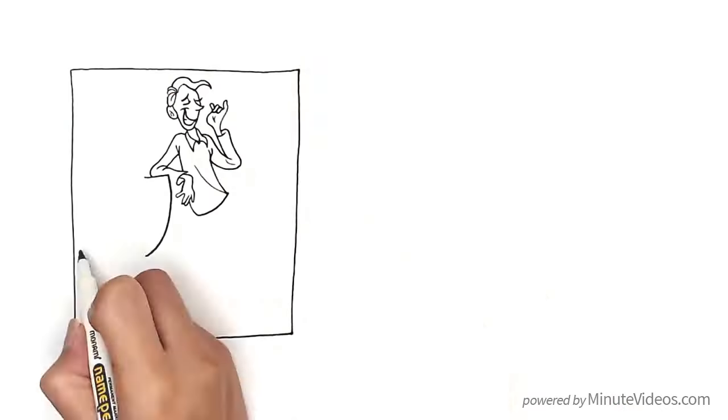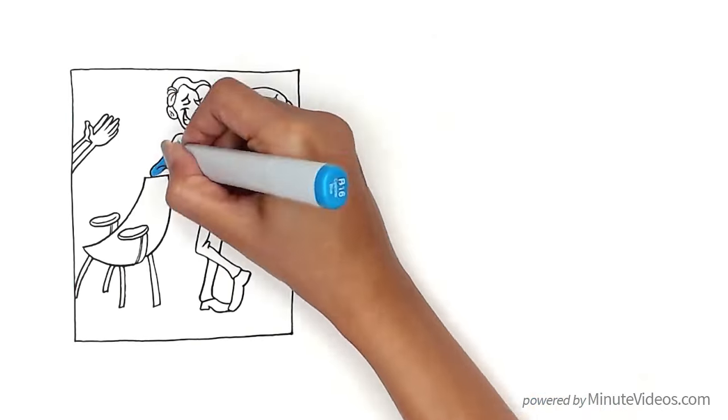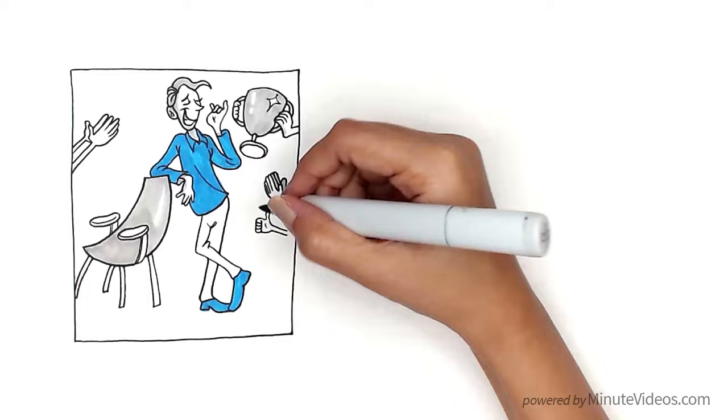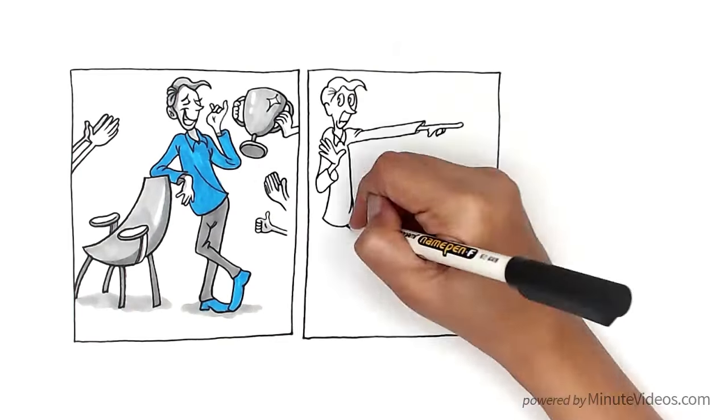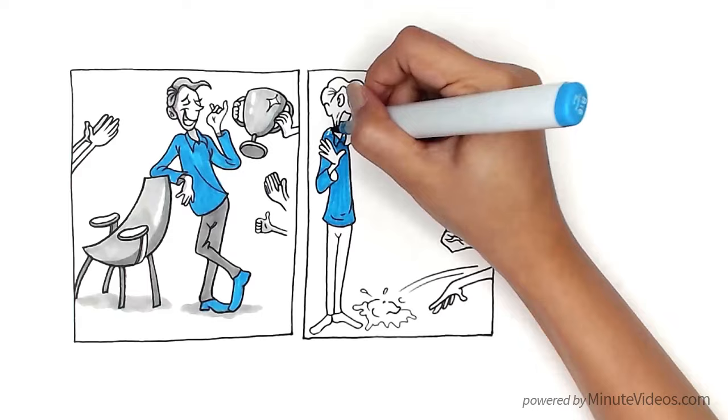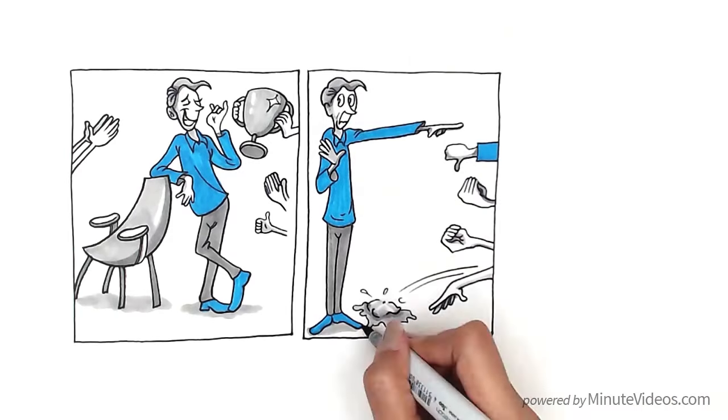The self-serving bias describes the tendency of people to attribute success to themselves and failure to outside factors. In other words, if it worked, it's because of me. If it didn't, it's because of someone or something else.